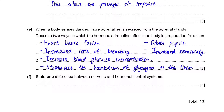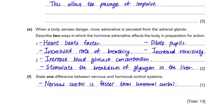Part F: state one difference between nervous and hormonal control systems. Nervous control is faster than hormonal control — it acts within milliseconds, whereas hormones may take a few minutes. However, hormonal control lasts for a longer period of time than nervous control, with effects that persist longer.